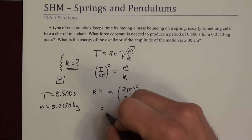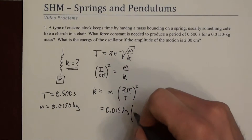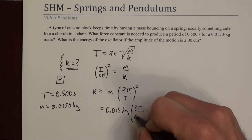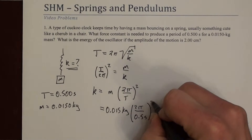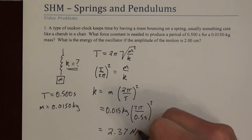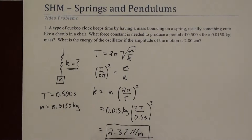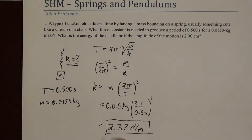Plugging in numbers: the mass is 0.015 kg times (2π / 0.5 s)², which gives k = 2.37 N/m, or kg/s². So if your cuckoo clock spring broke or stretched too far and you're shopping for a replacement, this is the spring constant you should look for — a different spring constant would make the clock run fast or slow.